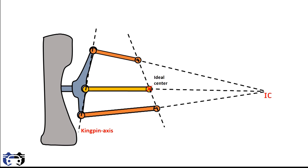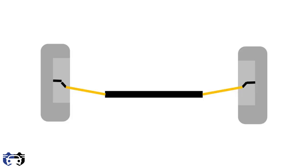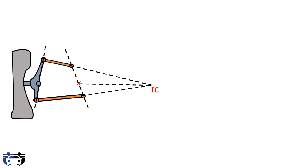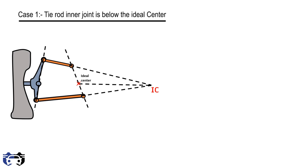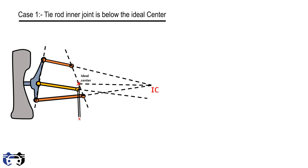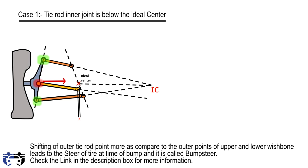Now let's see how roll steer occurs and causes understeer or oversteer. Note: this case uses a steering rack placed behind the spindle. In the first case, the tie rod is not aligned with the ideal center — it is below it by a horizontal distance x. When the tire hits a bump, the tie rod will try to cover more horizontal distance for the same vertical displacement. Since the tie rod is not rotating about the common instantaneous center, this will cause the tie rod joint to shift inwards more compared to the outer points of the upper and lower wishbones.